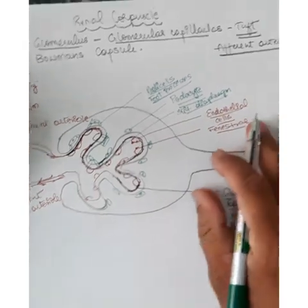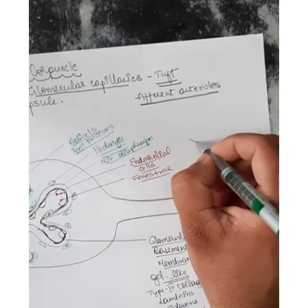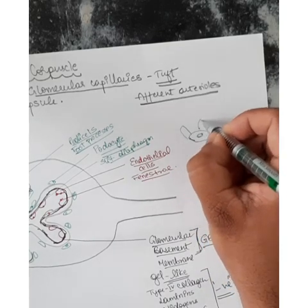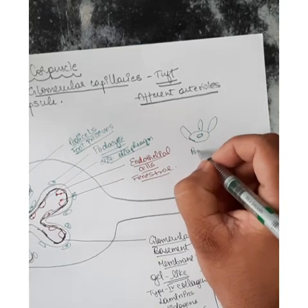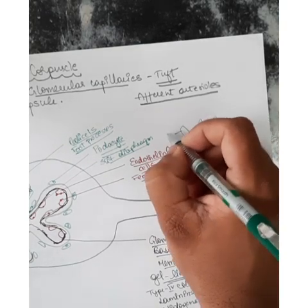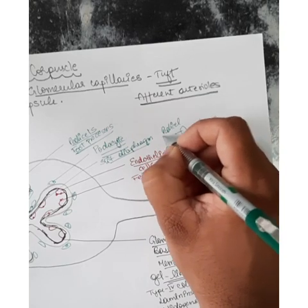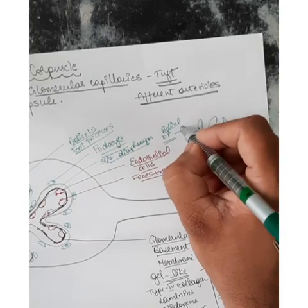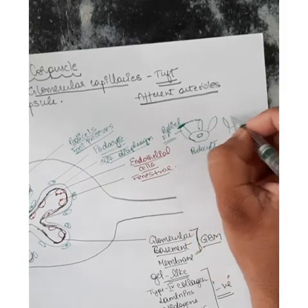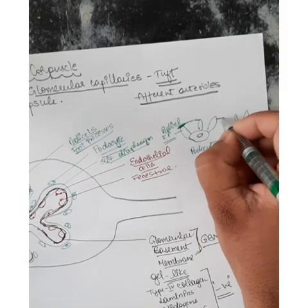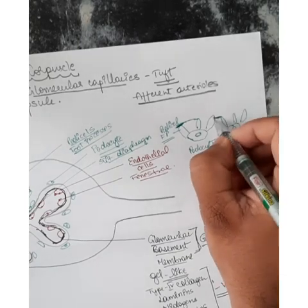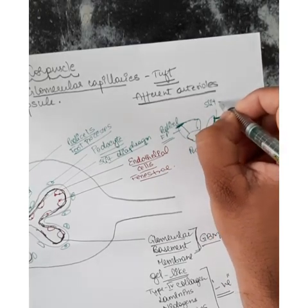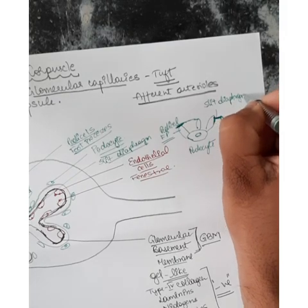So we have a podocyte which has finger-like projections called foot processes. These foot processes are attached to the glomerular basement membrane, and the foot process of one podocyte is linked or adhered to the foot process of another podocyte through a structure called the slit diaphragm.